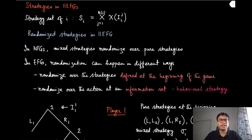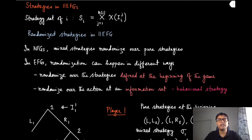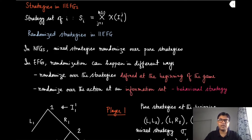In extensive form games, because there are multiple stages, you can think about randomization in two different ways. One is where you enumerate all possible pure strategies — the complete plan at every stage — and assign probabilities to those strategies. Or you can think about an independent probabilistic draw at every information set of the game.